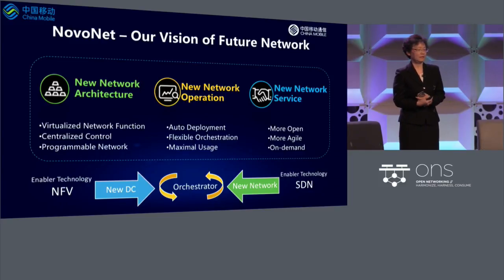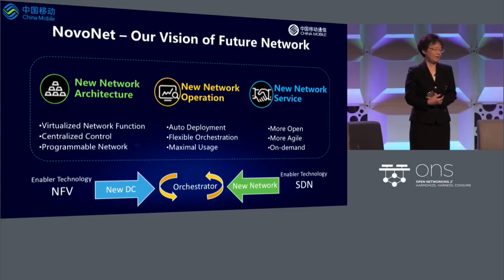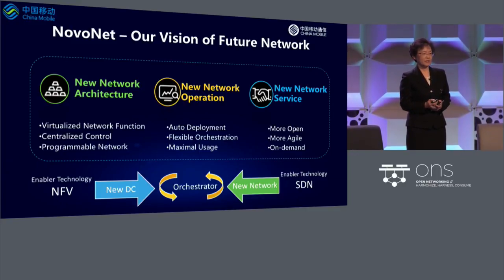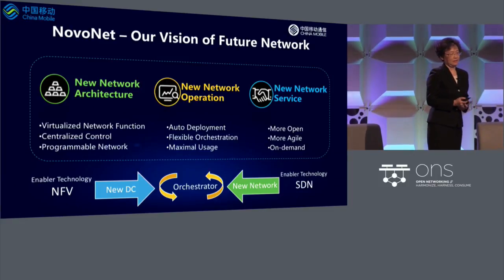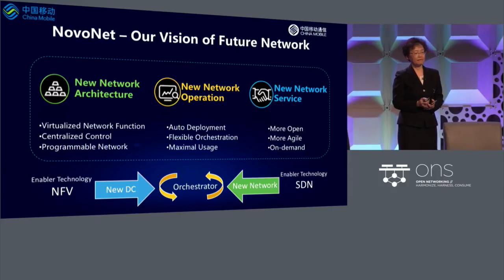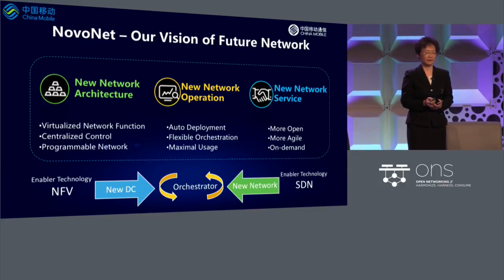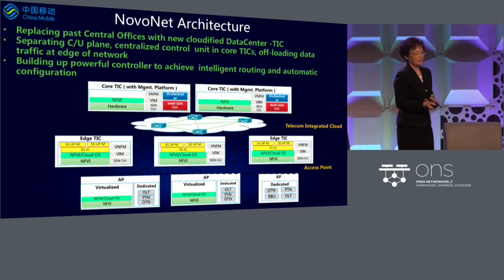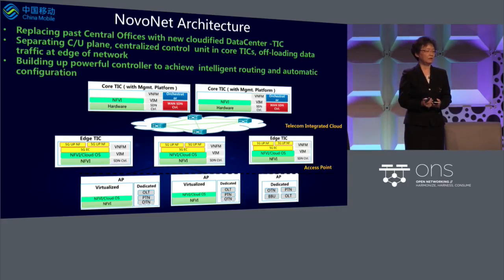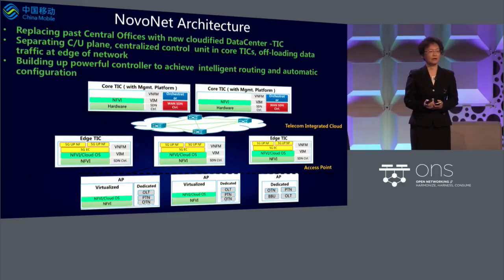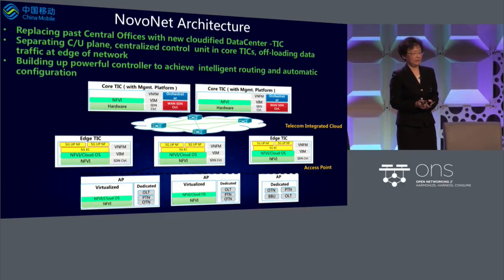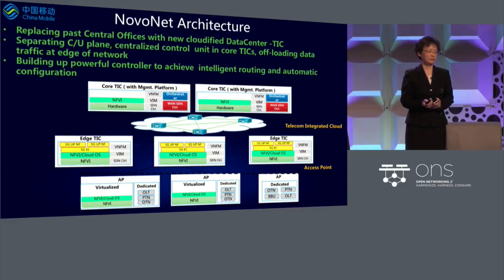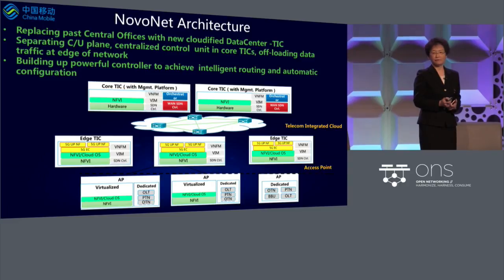The Normal Net is our vision of the future network. There are three goals in our future network: new network architecture, new network operation, and new network service. I believe NFV and SDN will be the enabling technologies for the future network. In order to deal with increasing huge data traffic and the need for diverse services, we are considering re-architecting the network to make it more efficient, more intelligent, and cost-savvy.